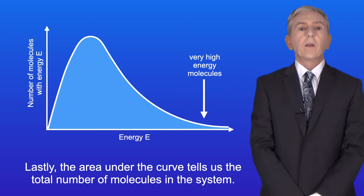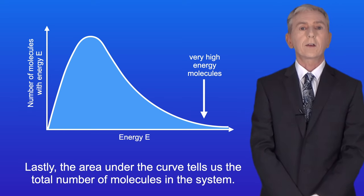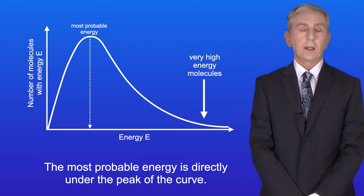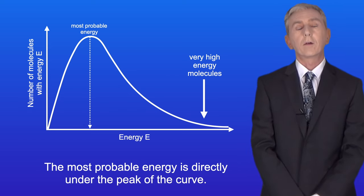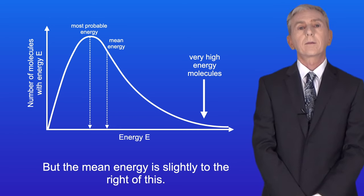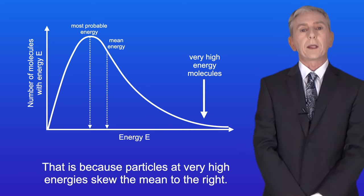And lastly, the area under the curve tells us the total number of molecules in the system. Now, the most probable energy is directly under the peak of the curve, but the mean energy is slightly to the right of this. That's because particles at very high energies skew the mean to the right.